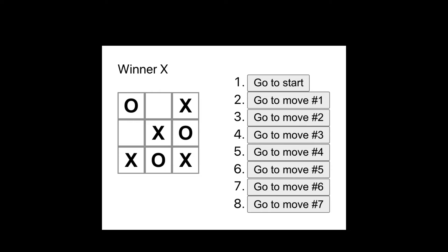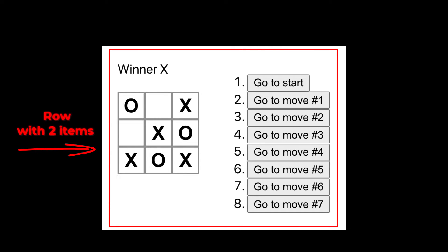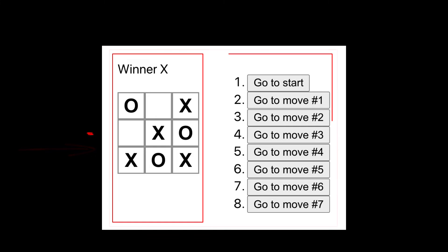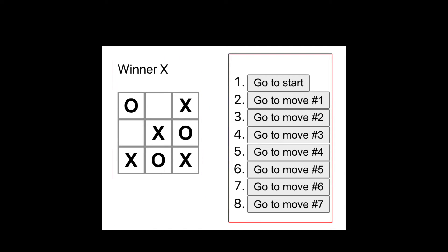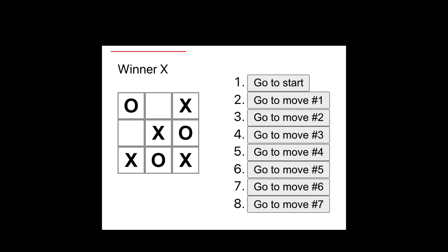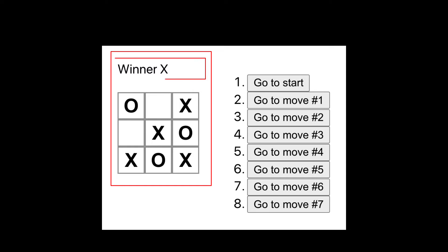Let's first take a look at the user interface that we are trying to build. Most user interfaces can be broken down into a collection of rows and columns. For example, the root of our application can be thought of as a row consisting of two items. On the left, we have the game status and the game board, and on the right, we have a history of all the moves that have been made in this game.